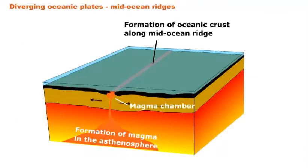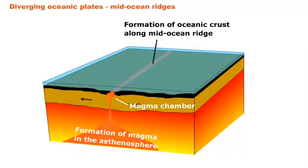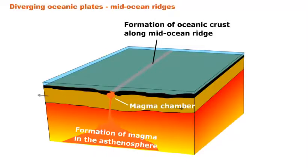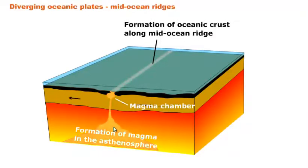Next up are diverging plate boundaries. Diverging means to move apart, so when two lithospheric plates move away from each other, they are diverging. This picture shows two oceanic plates diverging along the mid-ocean ridge, much like our mid-Atlantic ridge. Below the mid-ocean ridge, the asthenosphere occurs at a higher level than normal, and the material undergoes partial melting, resulting in the formation of basaltic magma.